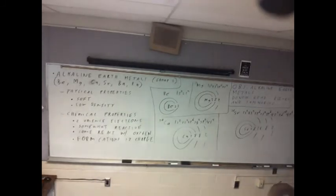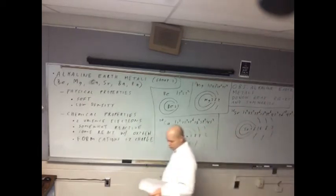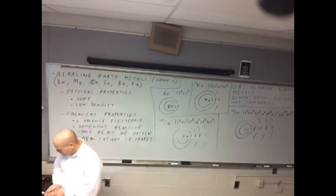And then if we did barium, it would be 32, 18, 8, 2, and so on. Alright, so that's really good for alkaline earth metals.